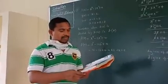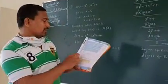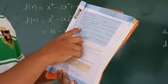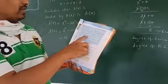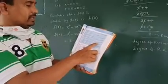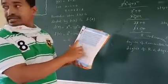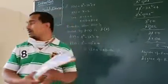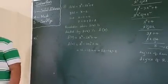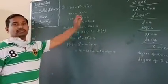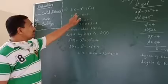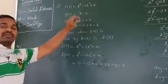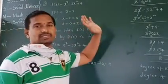Good morning students. Now let us discuss the last two problems. See the seventh one: find the remainder when f of x is divided by g of x, and verify the result by actual division. We already learned the remainder theorem, so using that we will find the remainder when f of x is divided by g of x, and also find the remainder by actual division.